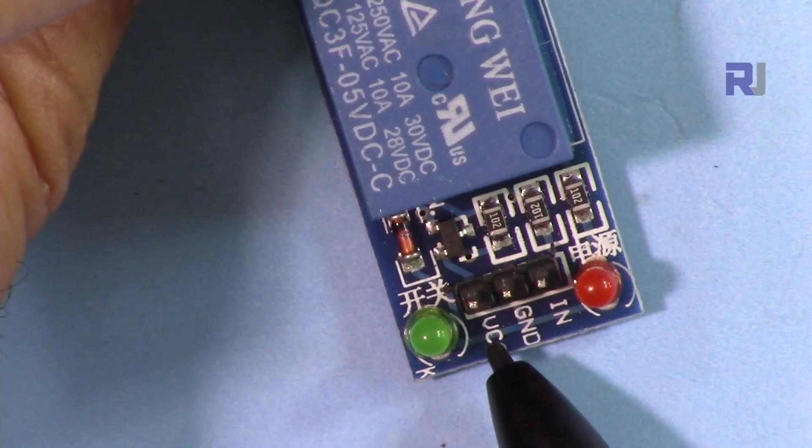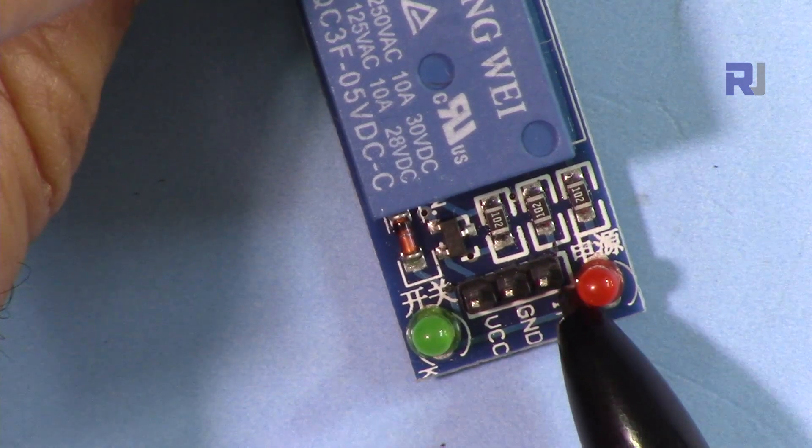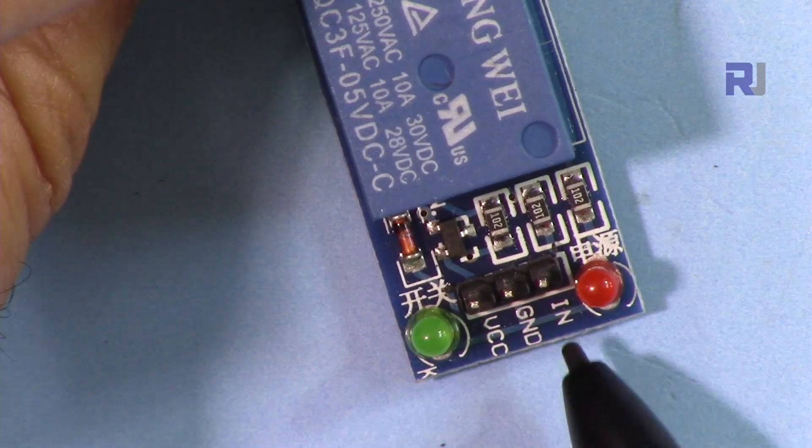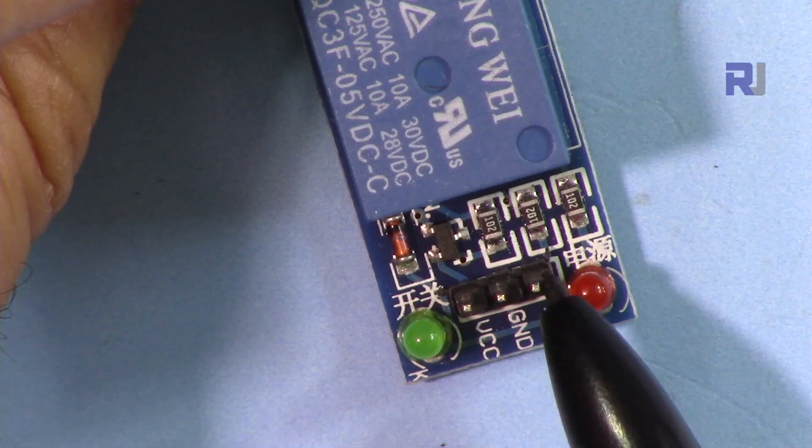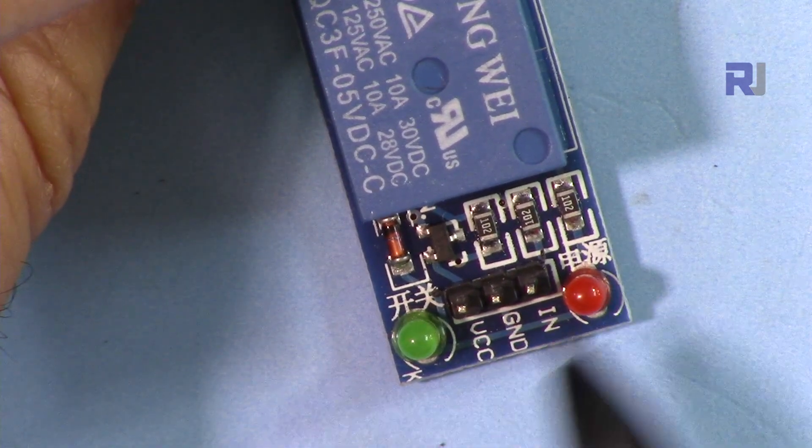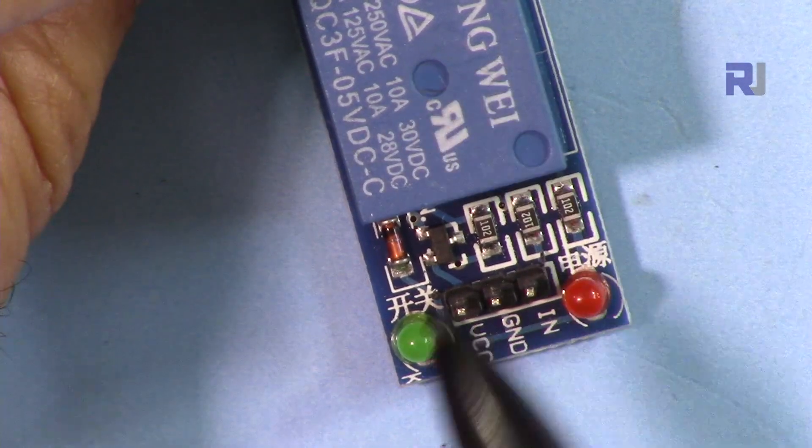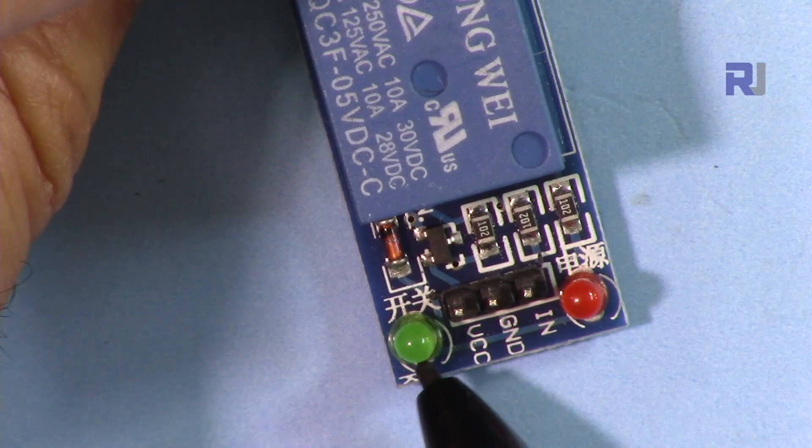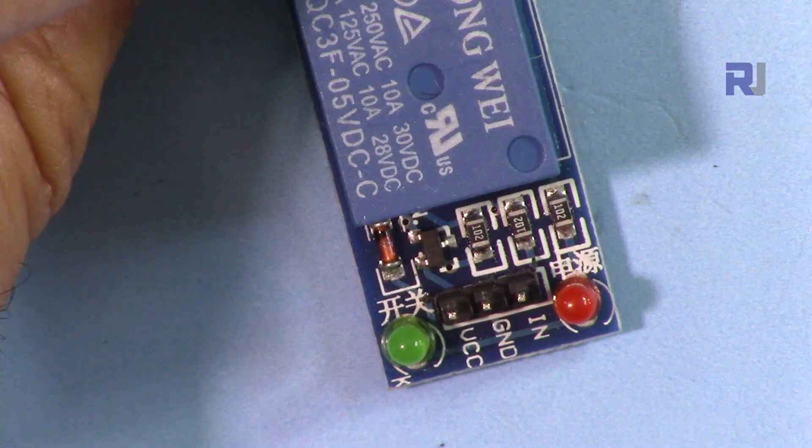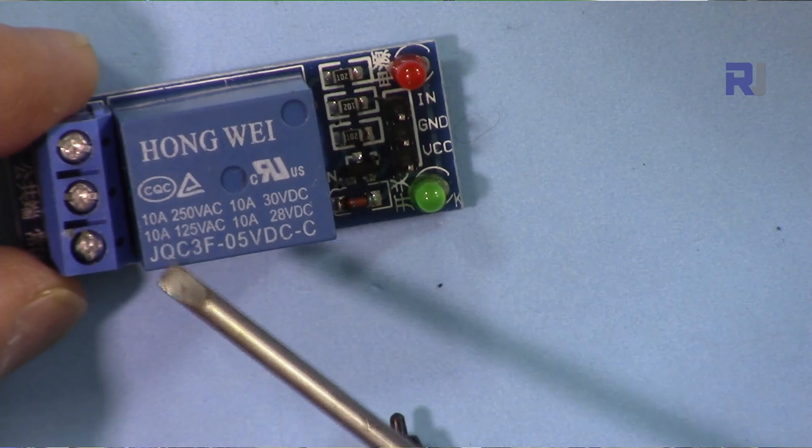Here we have three wires from this side. This is VCC which will be connected to 5 volts, this is ground, and this is the input which will come from pin 4. We have two LEDs here. This is a power LED, and this is when the signal comes and the relay is energized, this light will turn on green, telling you that there is a signal.